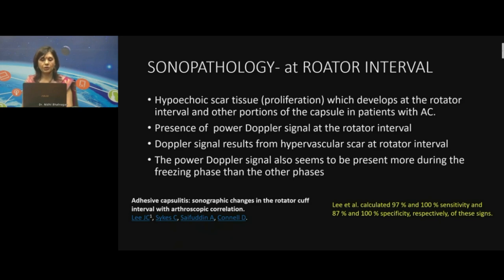Additionally, for the coracohumeral ligament, thickening greater than 4 mm gives us 60% sensitivity and 95% specificity for underlying adhesive capsulitis. This condition can also be associated with edema or fluid in the rotator interval.